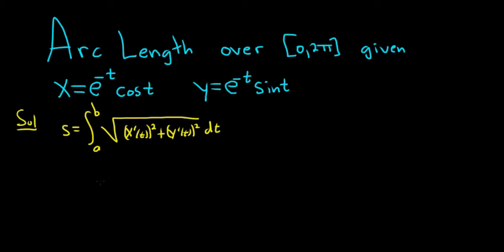So in this problem, we just have to take the derivatives and plug everything in. Our A is 0 and our B is 2π. So for all the derivatives, we're going to use the product rule.